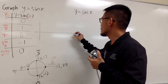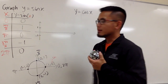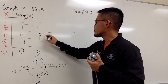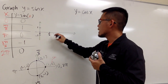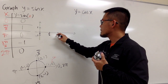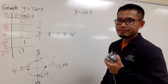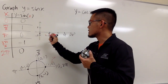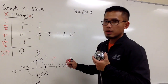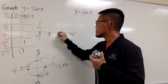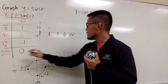Let me draw this quickly. I have 1 and negative 1 on the y-axis, and on the x-axis: 0 radians, pi over 2, pi, 3 pi over 2, and 2 pi. Plotting the points: (0, 0) is right here. Then pi over 2 comma 1 is up here. Then pi comma 0 is right here. Then 3 pi over 2 comma negative 1 is down here. Lastly, we get back to 0 at 2 pi.